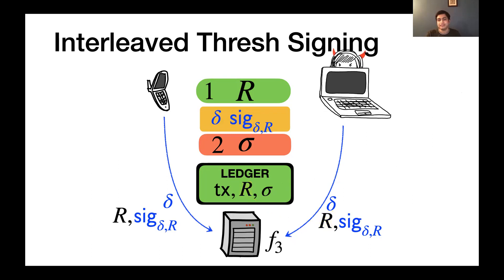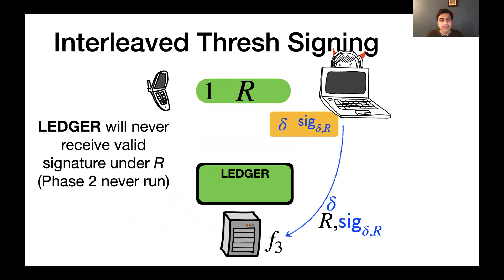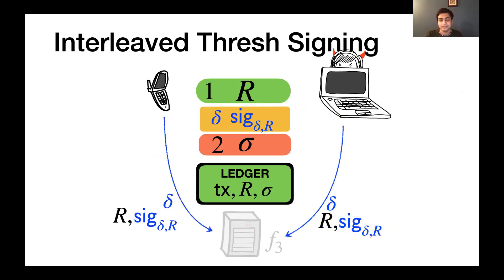So let's see what power an attacker has in this protocol. The attacker could choose to abort the protocol after getting just the refresh package delta and before running phase two. What this means is that the ledger is never going to receive a valid signature under r that was created in phase one. And this means that the refresh package is now benign. It's useless because the adversary has no information in completing the signature and so the signature is never going to appear on the ledger.